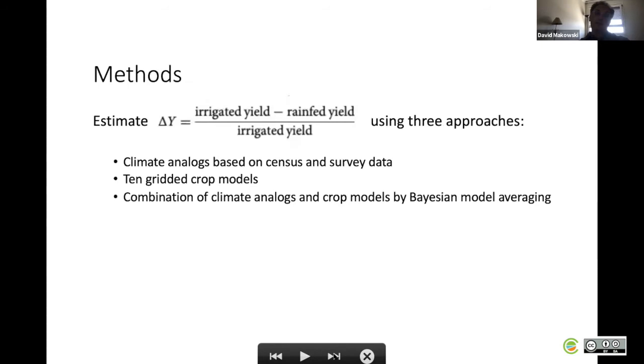Concerning the method, basically the principle is to estimate this quantity, delta Y, defined as the relative difference of irrigated yield minus rainfed yield divided by irrigated yield.